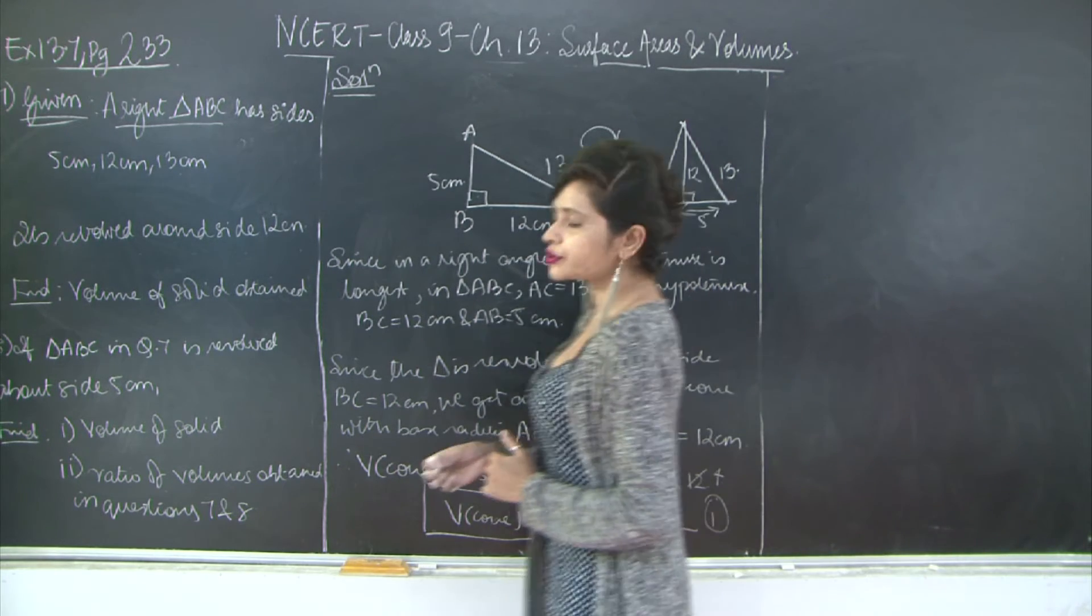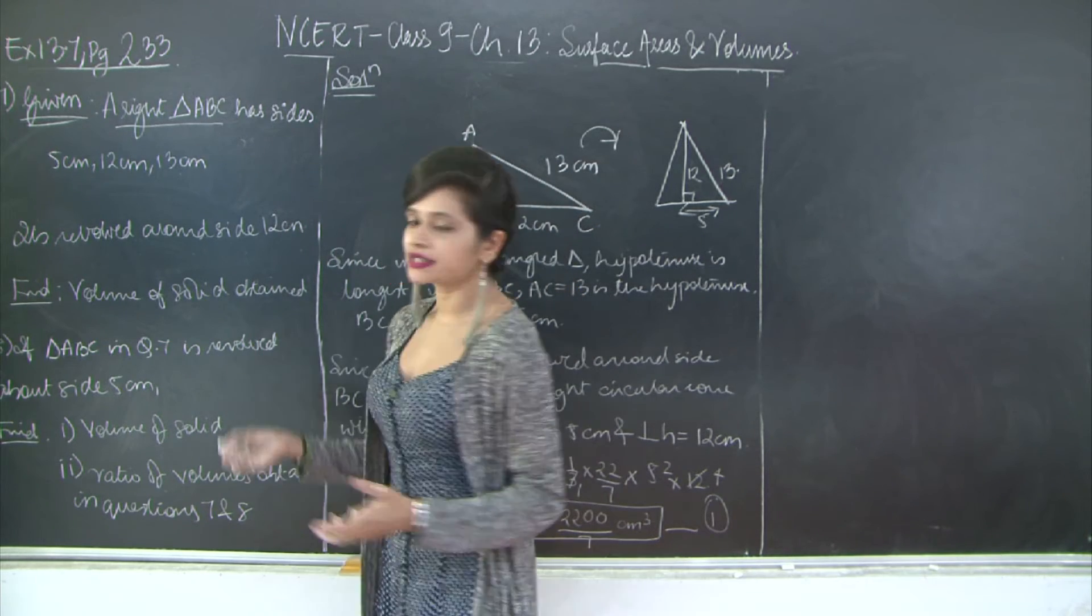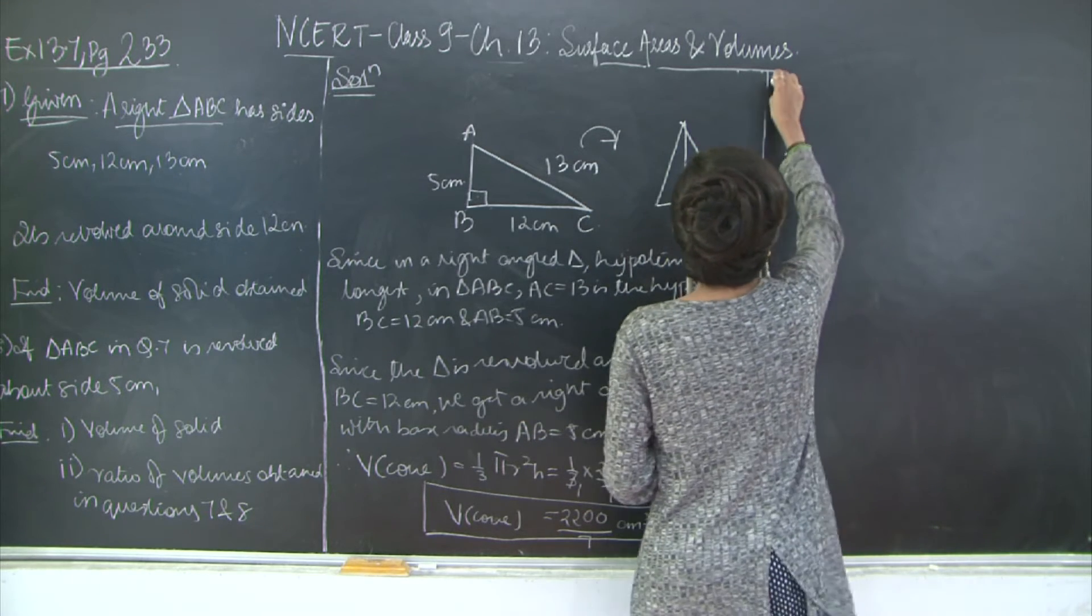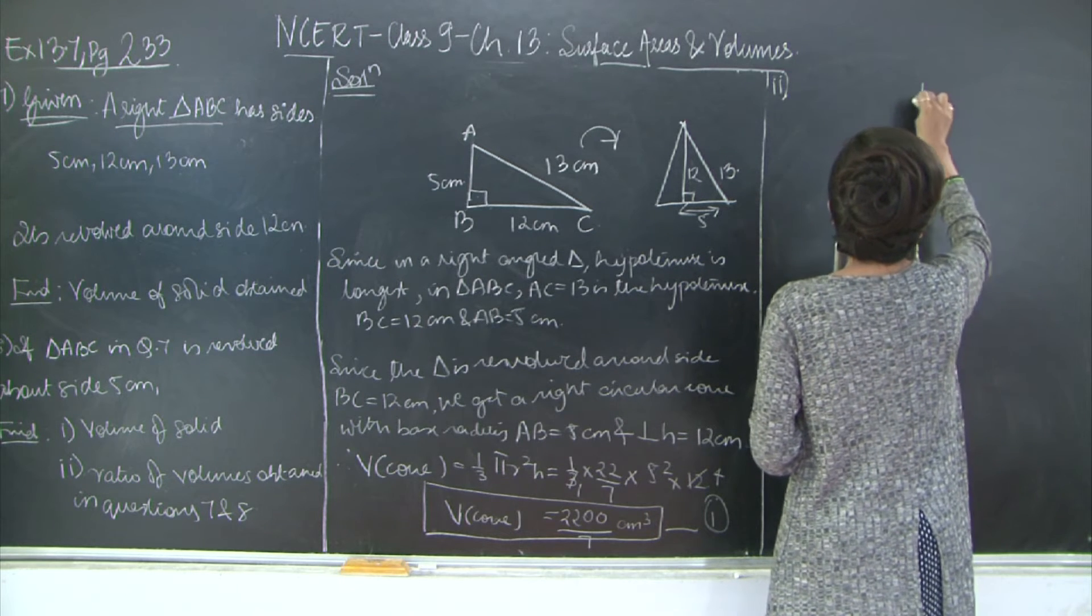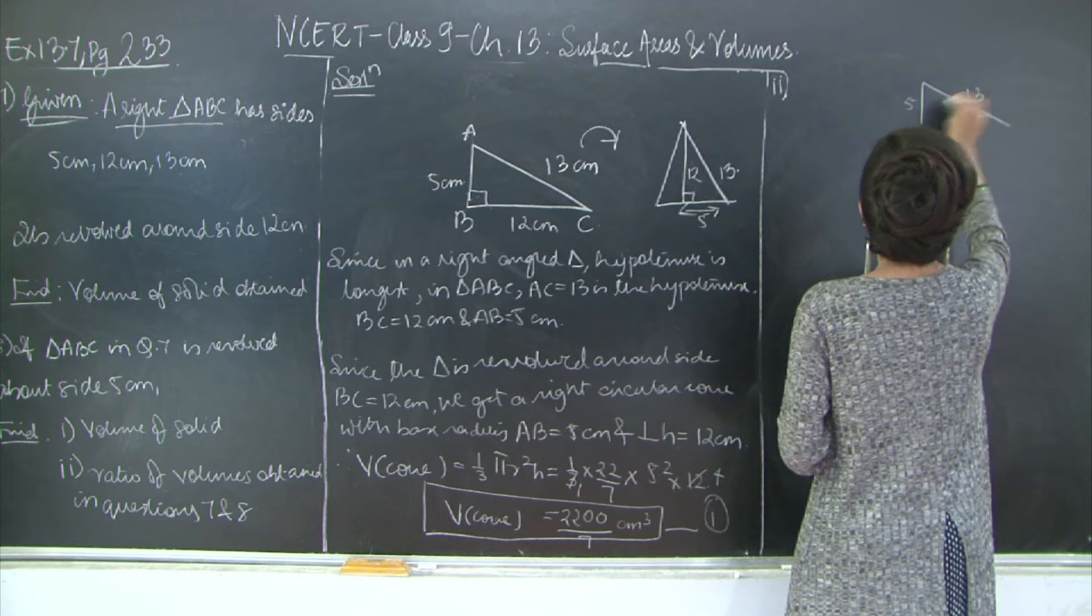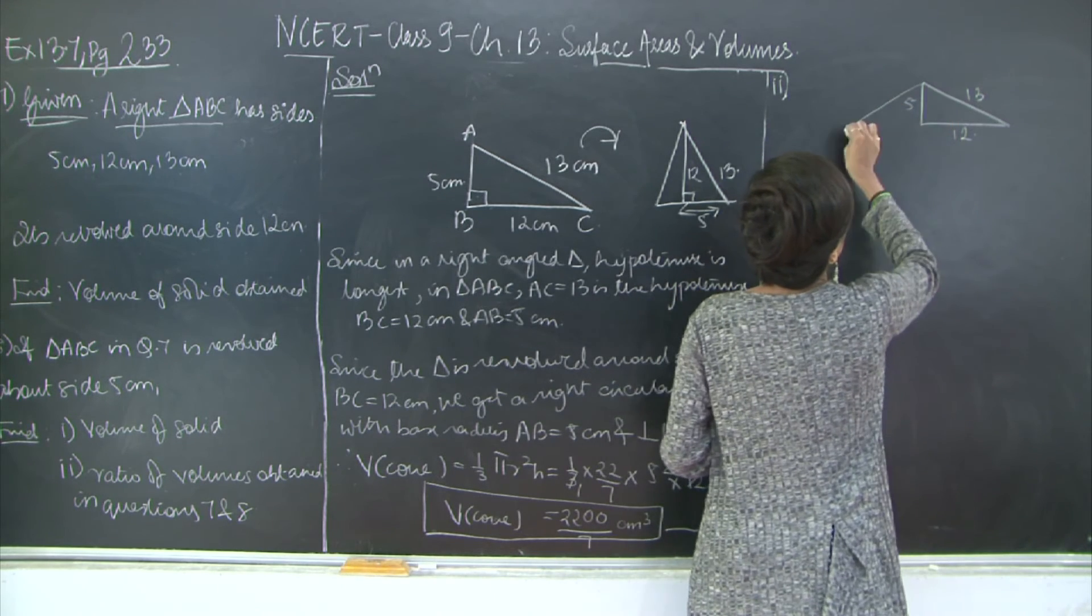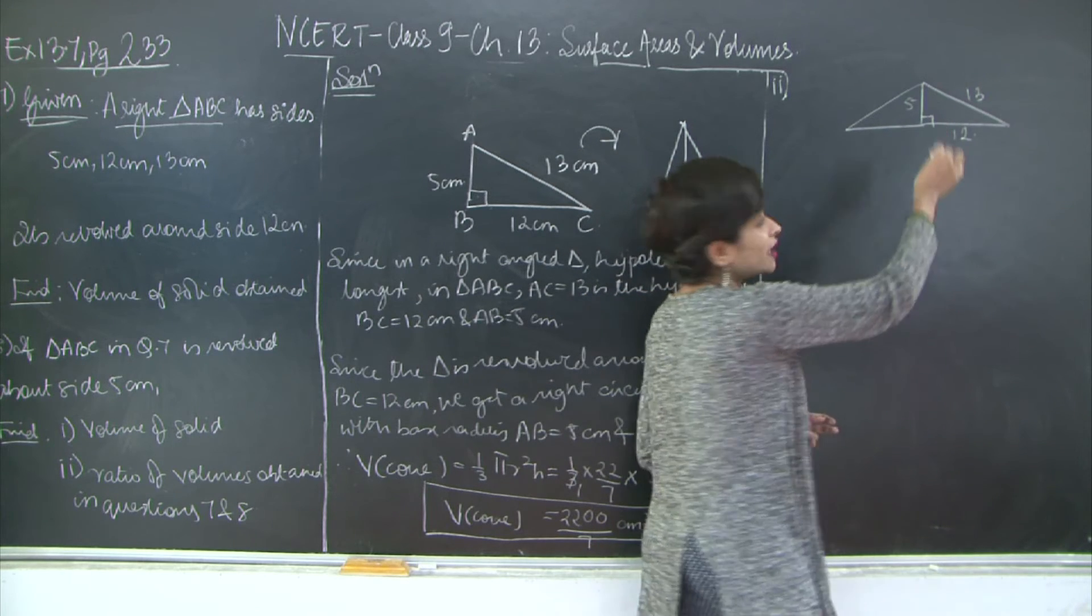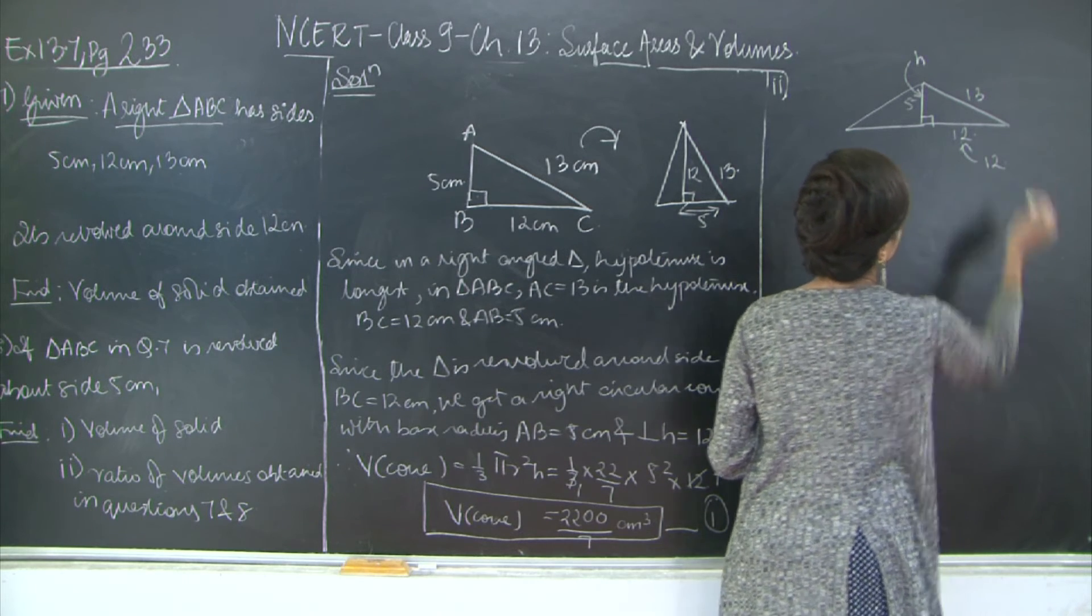Now moving on to question number 8. You have the same triangle ABC in question 7. Now this one is rotated about the side 5cm. So when you rotate it about the side 5cm what happens is you get the perpendicular height here as 5cm. The hypotenuse is going to be the same which is 13 and this becomes the base radius 12. So this is your cone.